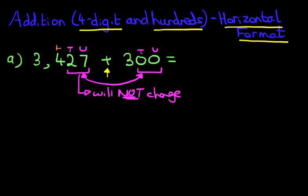What we are going to do, however, is add the hundreds over here. So we're adding the hundreds together. So we've got 4 plus 3. Now 4 plus 3 is 7.